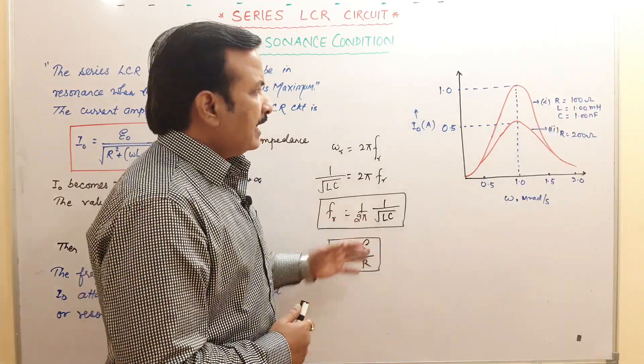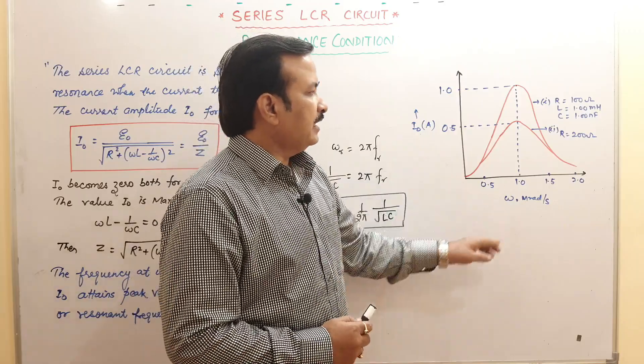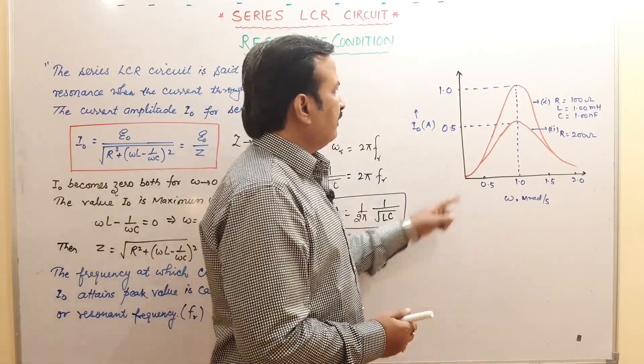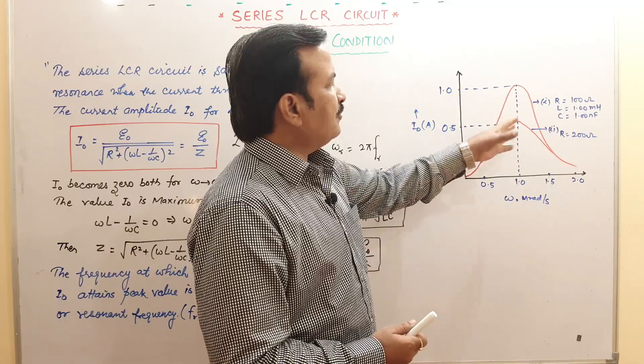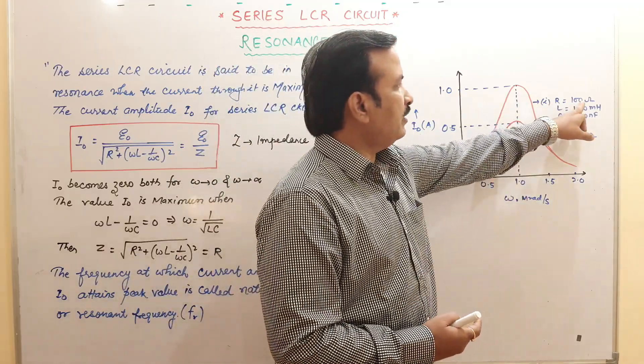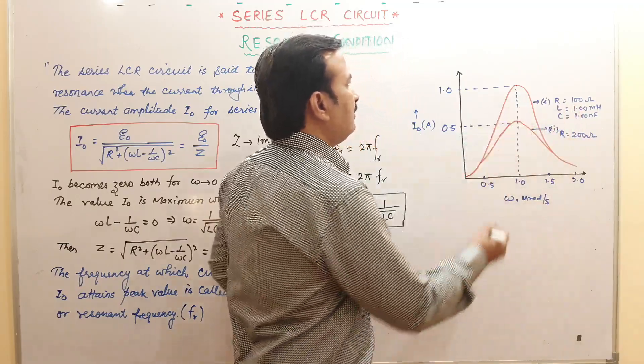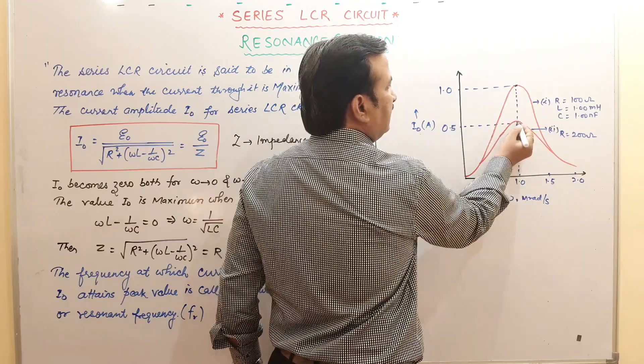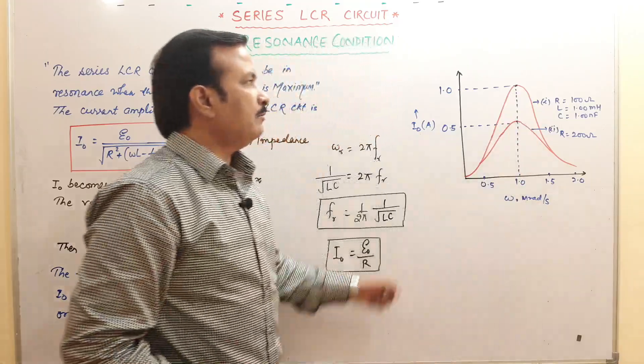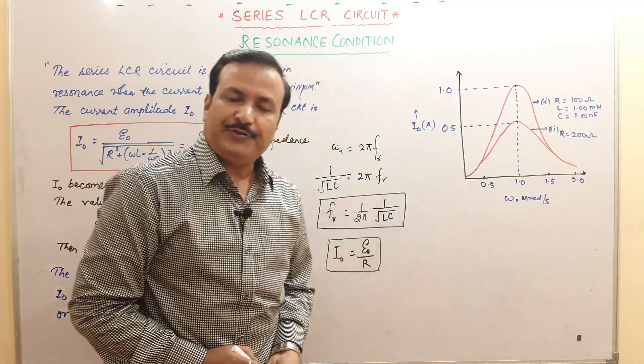When we draw the diagram or the graph between I naught and omega, you will find for 2 values it is made as it is in the NCERT book. Please remember the values for r is equal to this value, l is this, c is this. You will get this value and this is called the peak. These are the peaks of the current or the maximum value of I naught at different values.